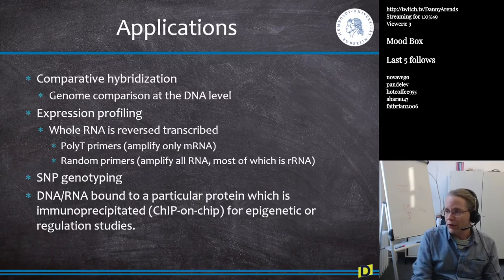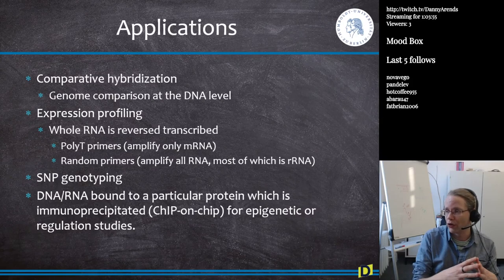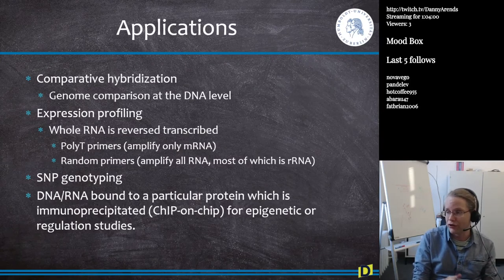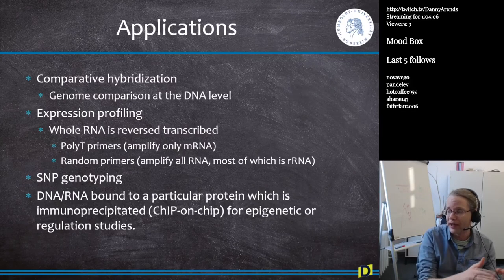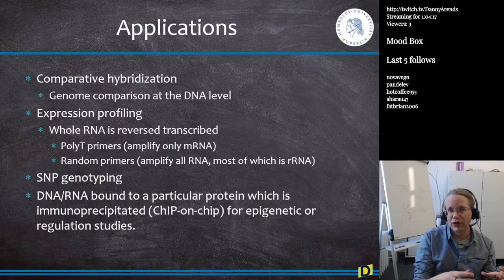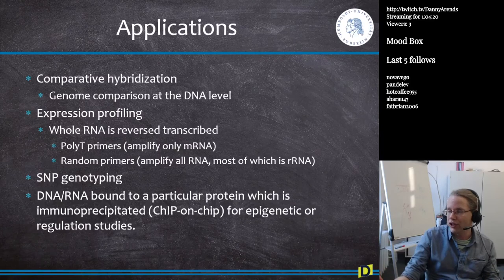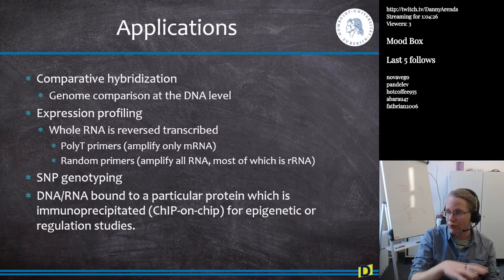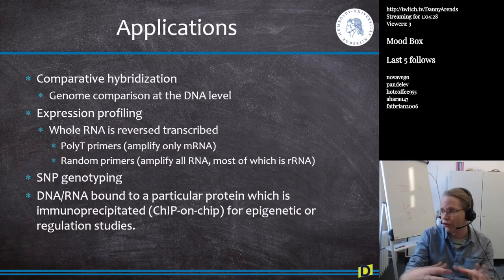Why do we use microarrays? One use is comparative hybridization — comparing genomes. This has nothing to do with gene expression; you just take DNA, chop it up into little pieces, and hybridize the genomic DNA to a microarray. This can be used for genome comparison: for example, if I have a microarray designed for humans and I take the genome of a monkey, I can chop up the monkey genome, put it on the human array, and see which parts of the human genome also occur in monkeys.